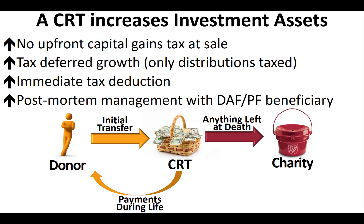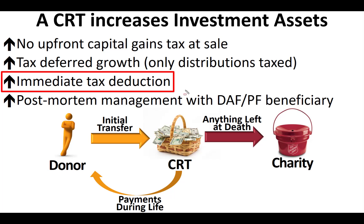Those are some of the advantages of this instrument. Financial advisors really like these too, because instead of managing $6.3 million left after paying taxes on $10 million, advisors are actually managing the full $10 million. Not only that, advisors can continue to manage even after the client dies, if the charity selected is a private foundation or a donor-advised fund that the advisor manages. It's a great way to increase assets under management — you actually have more than $10 million because of the massive tax deduction. So all the taxes you were going to pay out of other assets, you don't have to pay now.